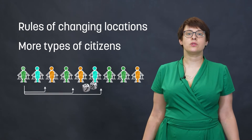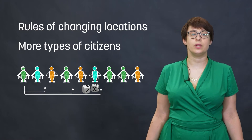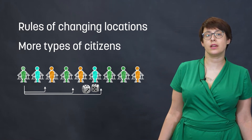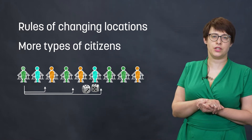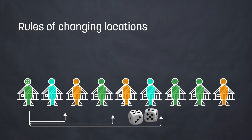We can also add other rules for changing locations, and we were talking about it a bit in the previous videos. But imagine that apart from going to the nearest place from left to right, this person can choose one from three good places in a random way. The rules can work in very different ways — everything depends on us.